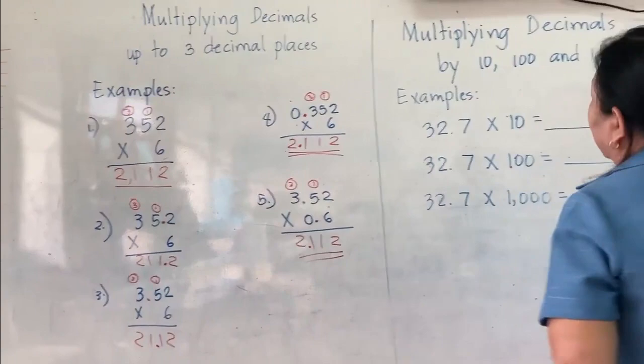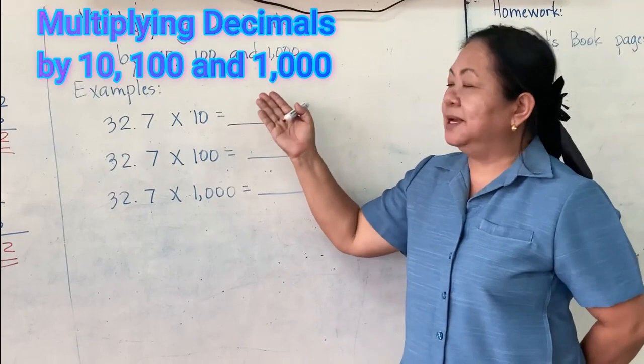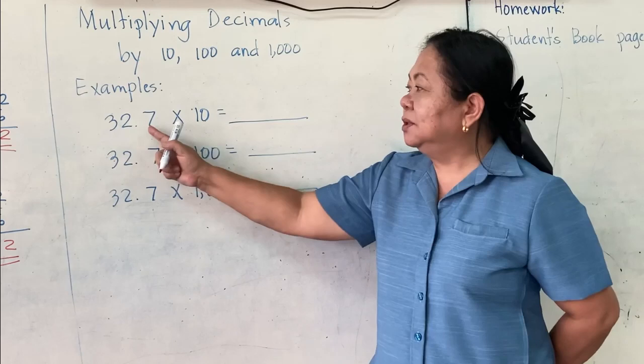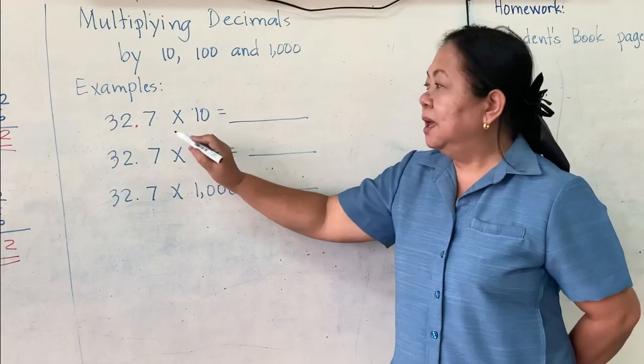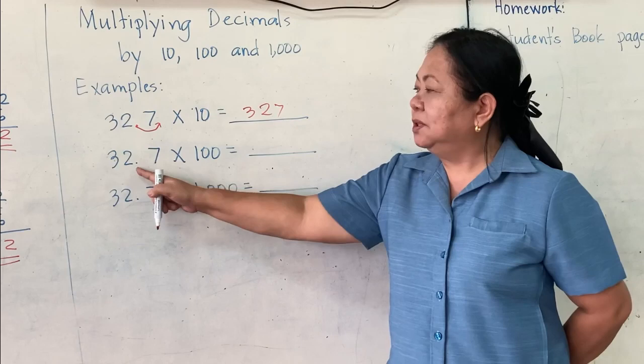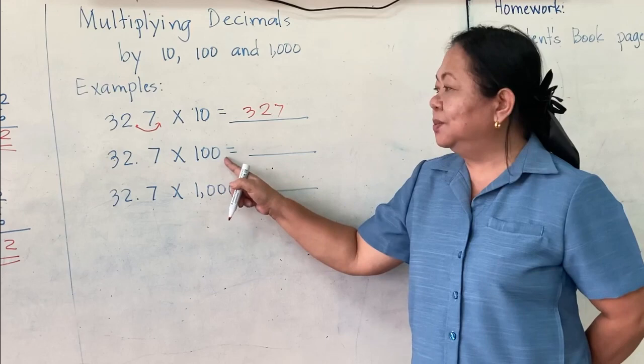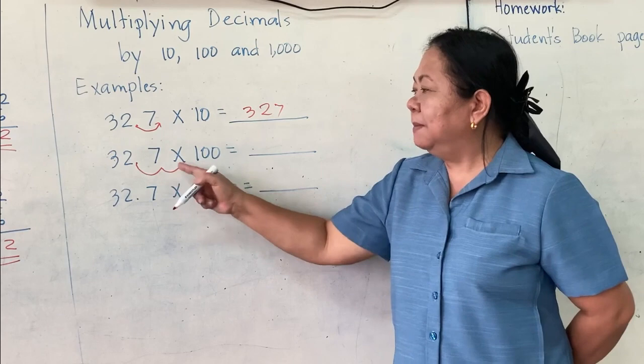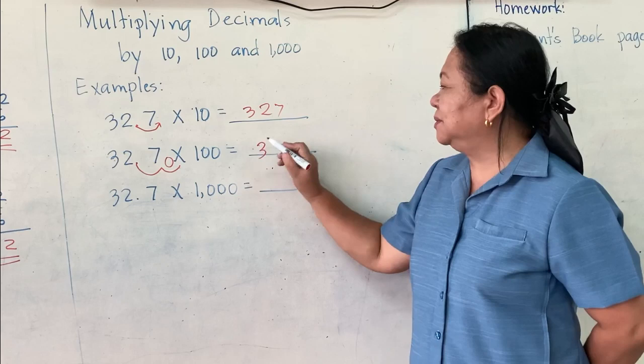There is some additional information about multiplying decimals by 10, 100, and 1,000. For example, 32.7 times 10: if the multiplier is 10, you will just move the decimal point 1 time to the right. Therefore, the answer is 327. Another: 32.7 times 100 — the multiplier is 100, there are two zeros, so move the decimal point 2 times to the right: 1, 2. Here it doesn't have a number, so you just add 0. The answer is 3,270.